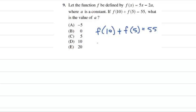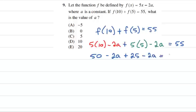f(10) plus f(5) equals 55. f(10) is going to be 5 times 10 minus 2A. So wherever there was an X, I plugged in a 10. f(5) is going to be 5 times 5 minus 2A. And they're telling us that whole sentence equals 55. Right now, we've only got one variable, so it shouldn't be hard to solve.